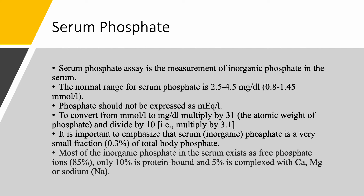It is important to emphasize that serum phosphate — which is inorganic, mineral phosphate — is a very small fraction of total body phosphate: only 0.3%. Most of the inorganic phosphate in the serum exists as free phosphate — about 85% — and only 10% is protein bound. With calcium, it's roughly half and half, with a large portion bound to albumin. This is not the case with phosphate, so we don't need to worry about ionized fractions as we do with calcium. Free phosphate is 85%, 10% is protein bound, and 5% is complexed with calcium, magnesium, or sodium.